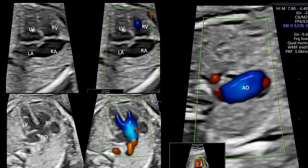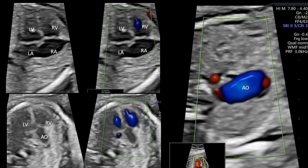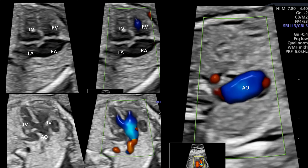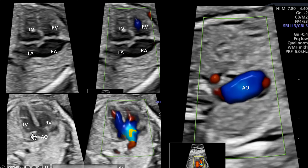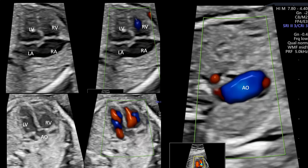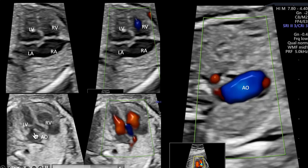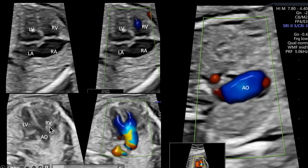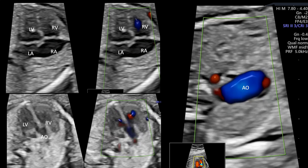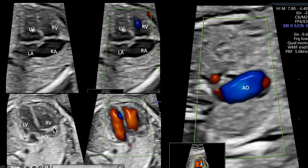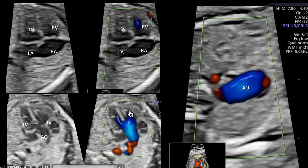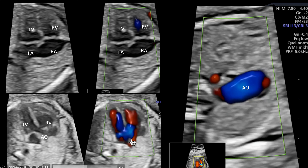When we tilt to the next view — the apical five-chamber view or LVOT view — where we see the aorta coming out of the left ventricle, we notice a very interesting thing. There is a large VSD and there is an aortic override of about 50 percent, with blood coming from the right ventricle and the left ventricle filling the aorta.